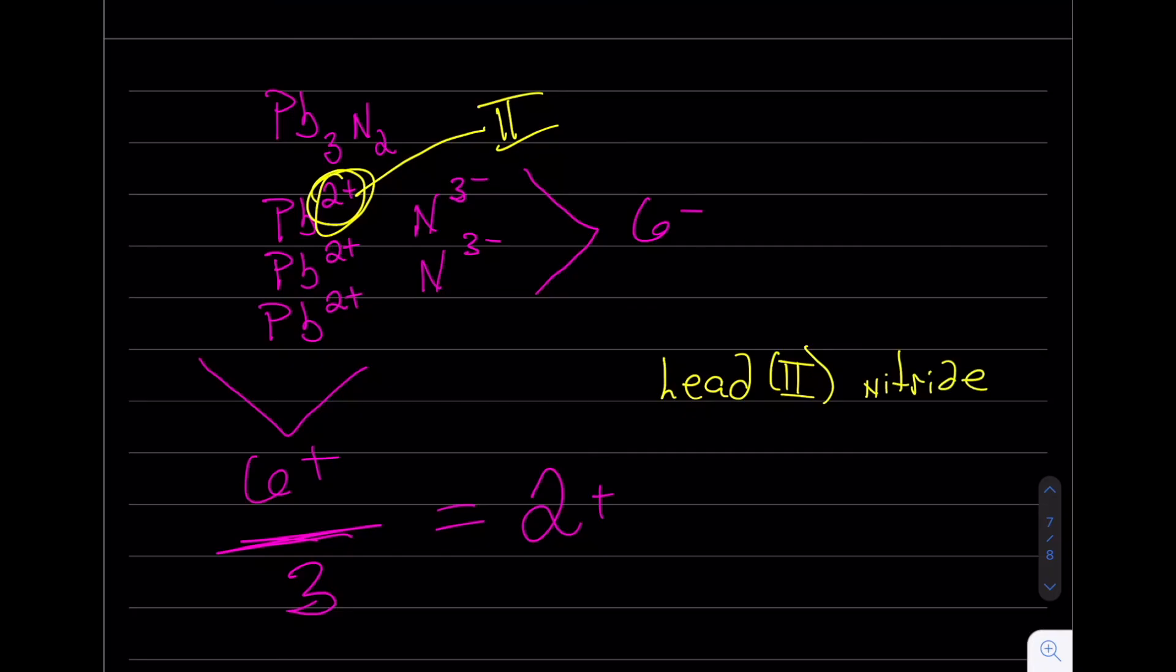This is not difficult, but you do need to kind of think it through. You break apart the formula, figure out the charge on the anion, which will then let you figure out the charge on the cation. Alright, that's it for today. Have a good one.